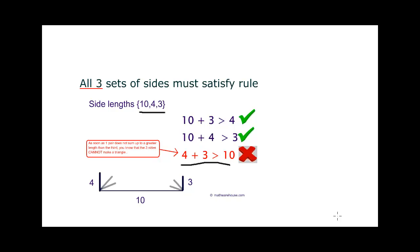Notice that the problem we had was with the two smaller sides. When the two smaller sides are not bigger than the third side, that's the problem — because it's always the smaller sides, like the 4 and the 3, that are not going to be able to touch. So when we have three side lengths and want to know if they can make a triangle, all we need to focus on is the two smaller sides: add them up. If they're not bigger than the other number, you can't make a triangle. That's the triangle inequality theorem.